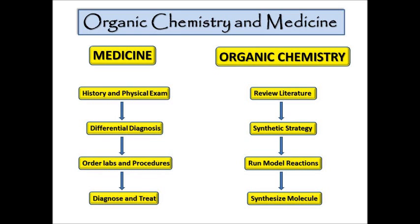Just like medicine has a specific algorithm a physician would go through, organic chemistry has a similar one. In medicine, a patient will come in and present with various symptoms. The physician takes a thorough history and physical exam, comes up with a differential diagnosis, orders labs and procedures, and then combines those results with the differential to arrive at a diagnosis and treat the patient.